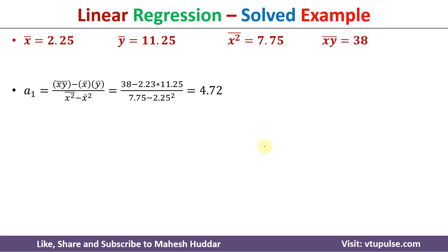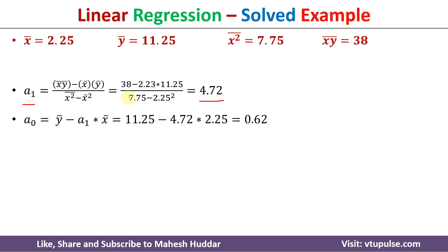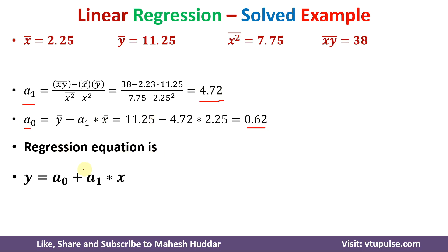Once this table is ready, we plug the values into the equations. Substituting into the a1 formula gives a1 = 4.72. Substituting into the a0 formula gives a0 = 0.62. So the linear regression equation becomes y = 0.62 + 4.72x.